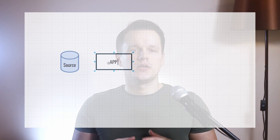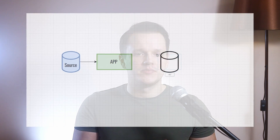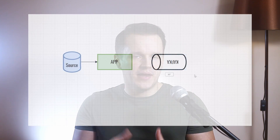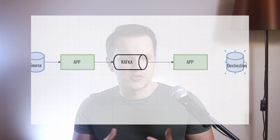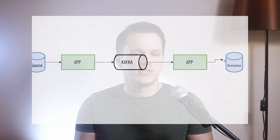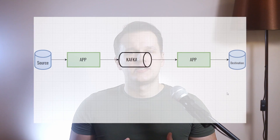When referring to delivery semantics, we mean the process that lies between the producer, broker and consumer. We are not considering parts where the producer reads some data from a source and the consumer processes records from Kafka down to external storage or a system. We will also cover some details concerning a read-process-write scenario and transactional API.